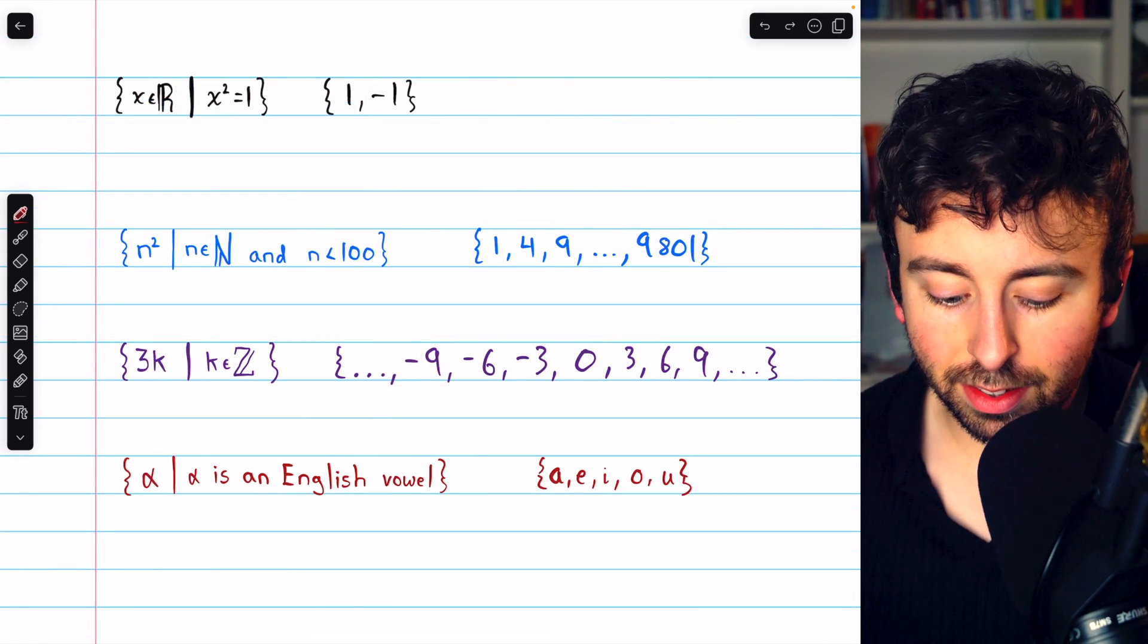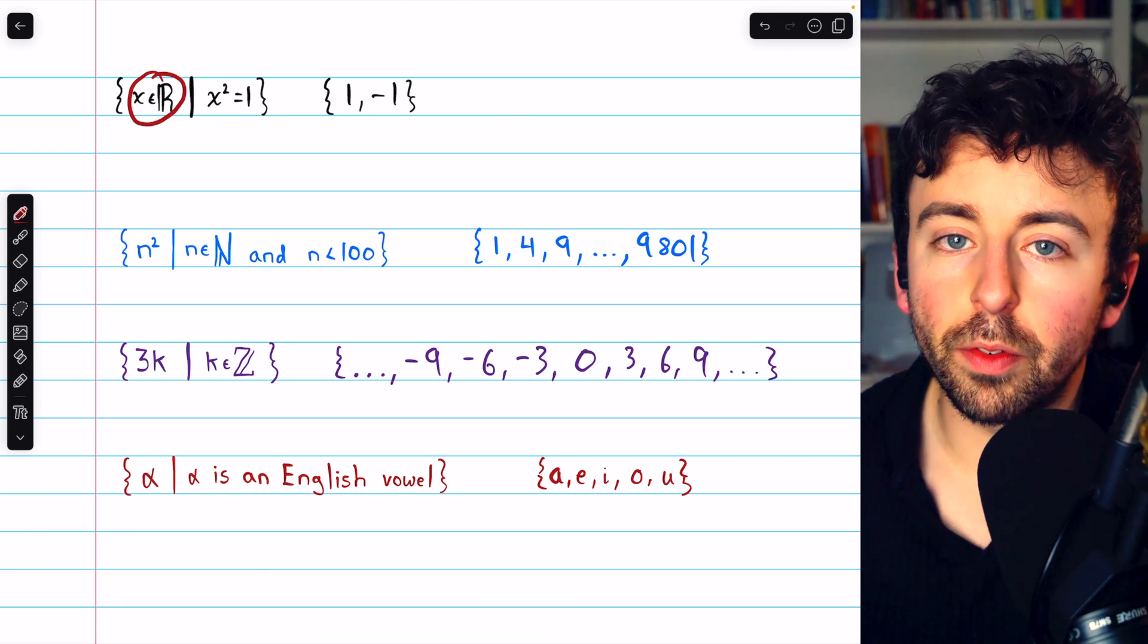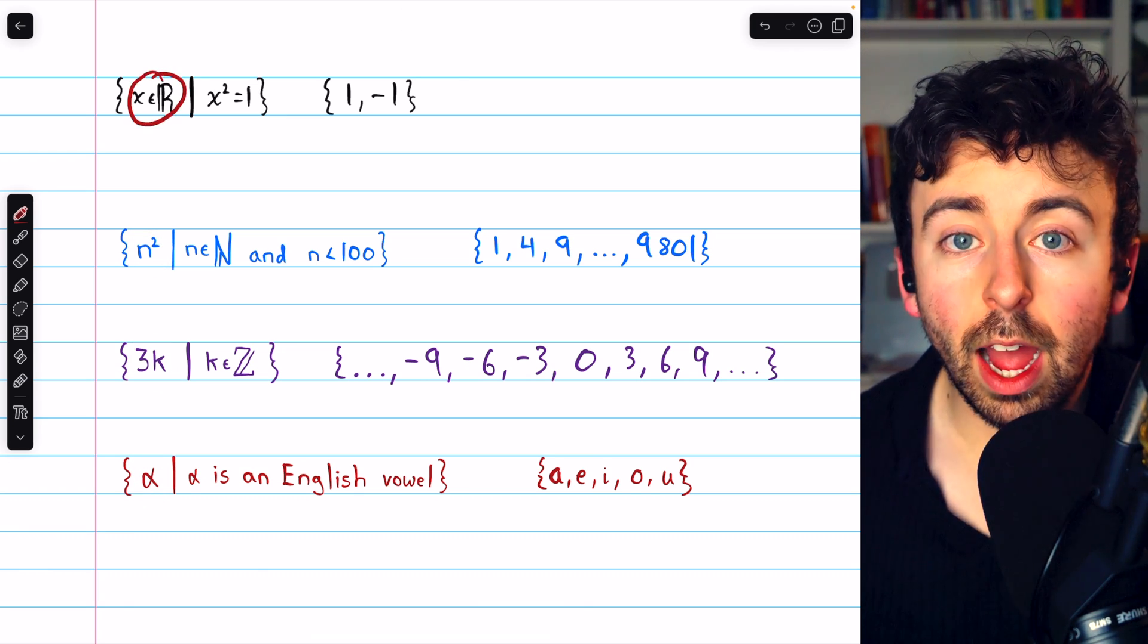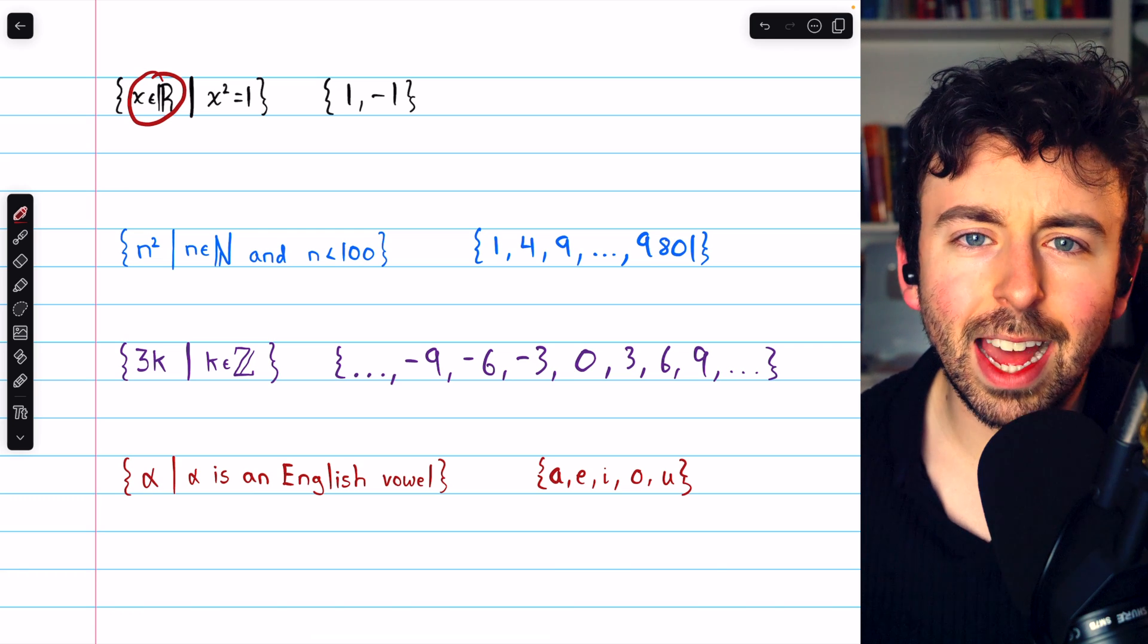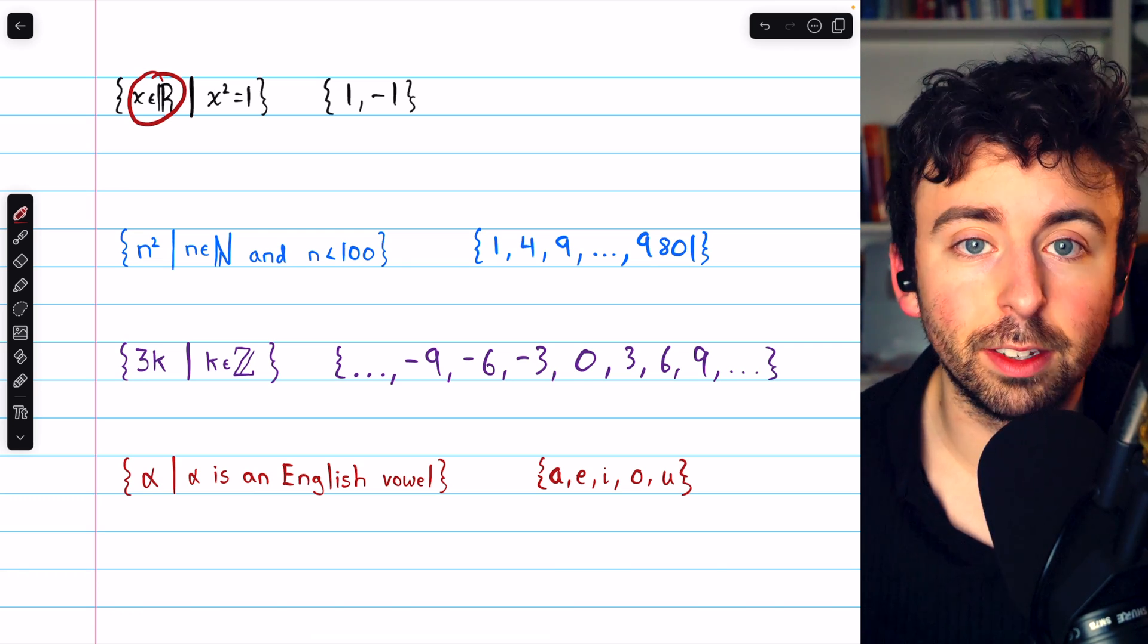Remember, in some of these sets, we give the general form of an element. In other sets, we give the universe that the elements come from. Either one is fine. Just make an intelligent choice about what works most easily for the set you're trying to describe.